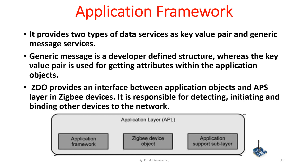ZDO, that is ZigBee Device Object, provides an interface between application objects and the APS layer in ZigBee devices. It is responsible for detecting, initiating, and binding other devices to the network.